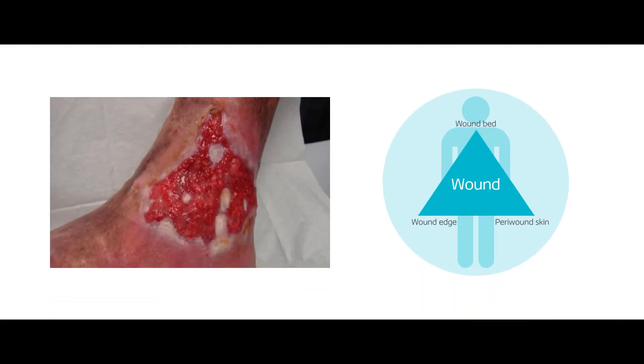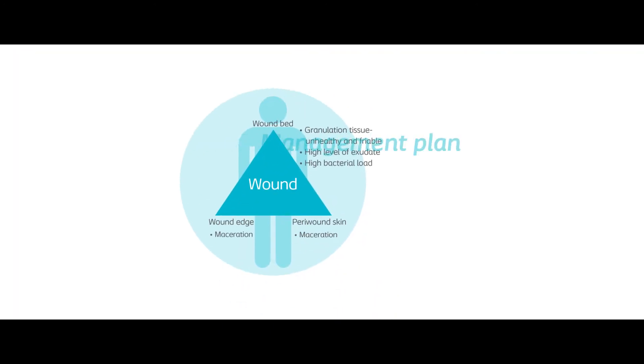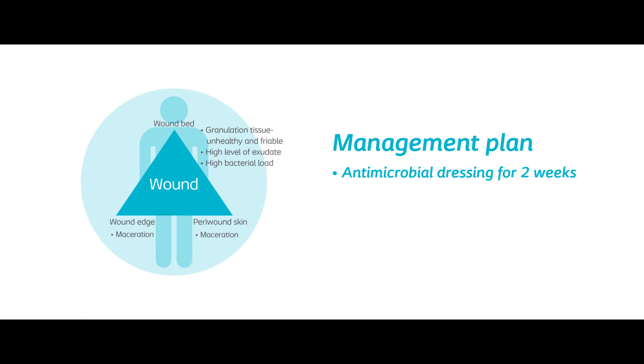In clinic today we have a 43-year-old gentleman who presents with a non-healing venous leg ulcer. It is painful and it's malodorous. When we use the Triangular Wound Assessment framework we can see that there's granulation tissue here, but it's unhealthy, friable granulation tissue that bleeds easily. If we look at the wound edges and the peri-wound skin we can see that it's macerated from high volumes of wound exudate, and that's associated with a high bacterial load. So we suspect that this gentleman has an infection, and we will treat him for two weeks with an antimicrobial dressing and give him some analgesia to manage his pain.